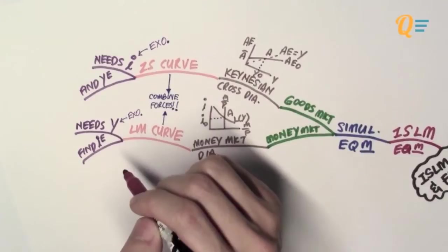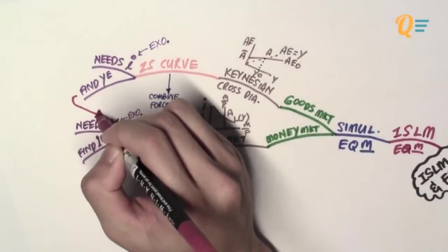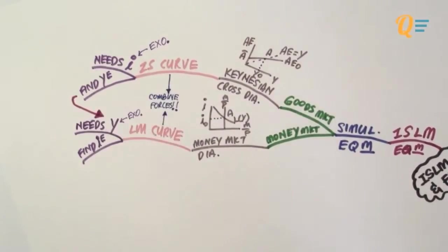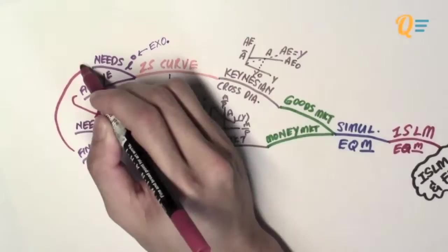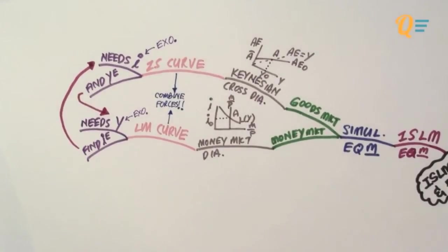The IS curve provides the equilibrium level of output, passes it over to the LM side so that the equilibrium level of interest rates can be found, which is then passed back to the IS side to again find the equilibrium level of output. That is how the two curves interact with one another.